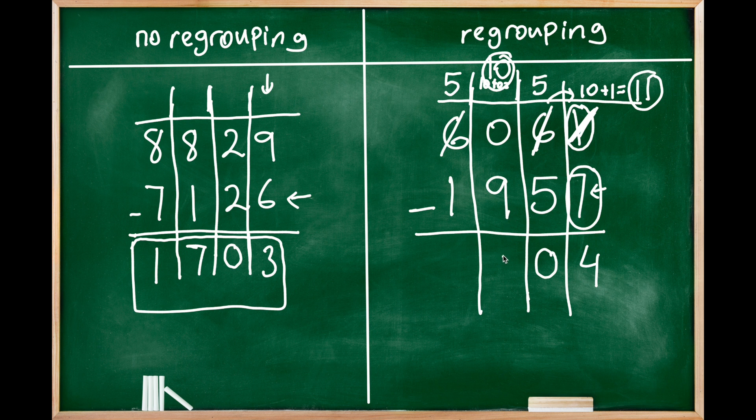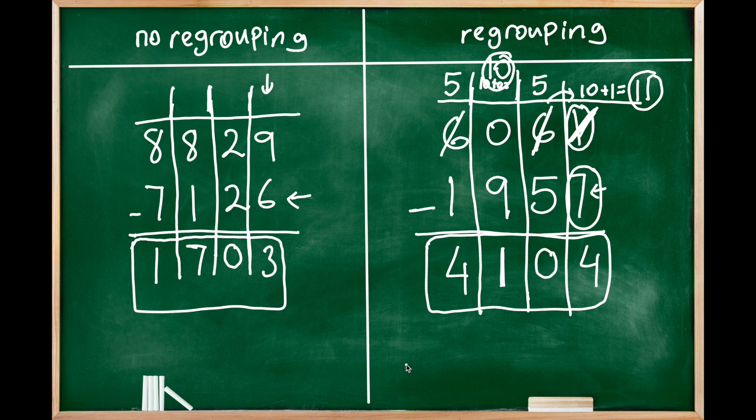And then 5 minus 1 is possible, obviously, so we can write 4 there in the thousand place. So our difference, the answer to the subtraction problem is known as difference, four thousand one hundred four.